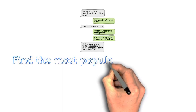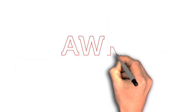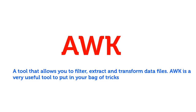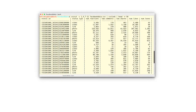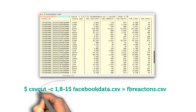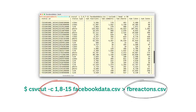Find the most popular status entry. To do this analysis efficiently, we'll use the command line language called awk — a tool that allows you to filter, extract, and transform data files. Awk is a very useful tool to put in your bag of tricks. However, since the dataset has quoted text cells, we will use csvcut to extract the columns — e.g., columns 1 and 8 to 15 — into a file called fbreactions.csv.